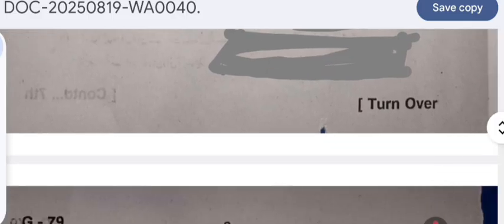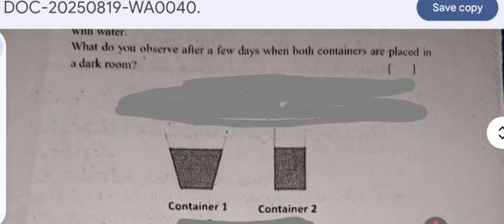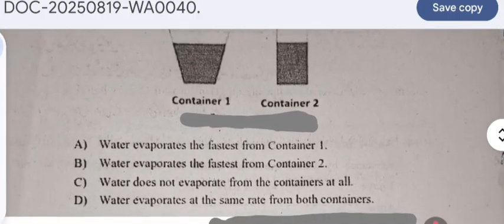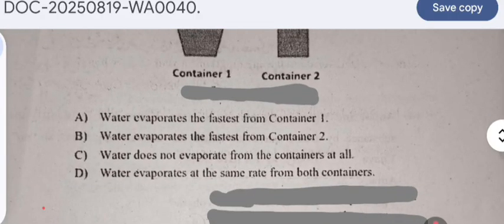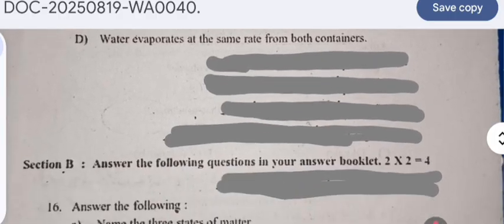On the 6th page, question 15 is the last multiple choice question. Given below are two containers with different shapes, both filled with water. What do you observe after a few days when both containers are placed in a dark room? Container 1 and container 2, depending upon the rate of evaporation, you can answer it.